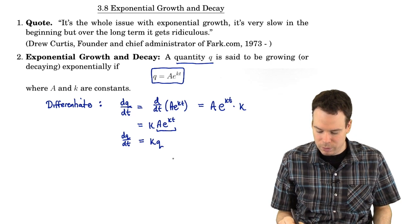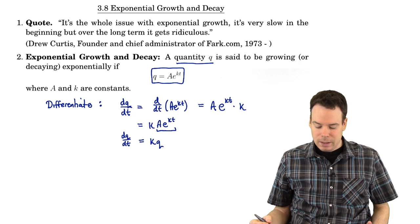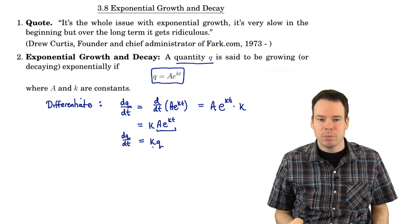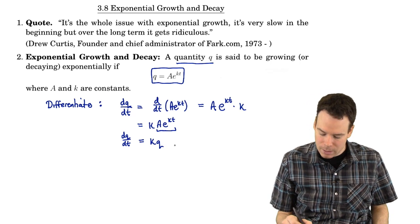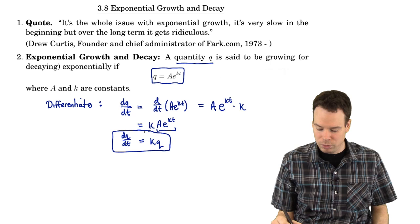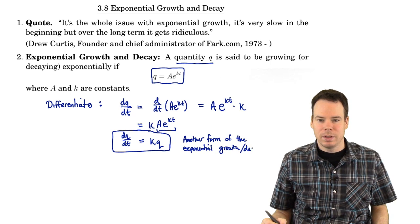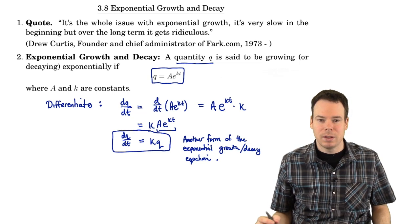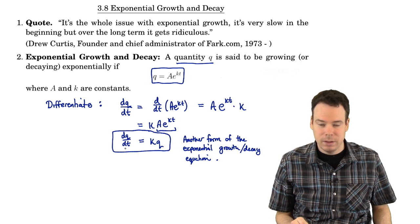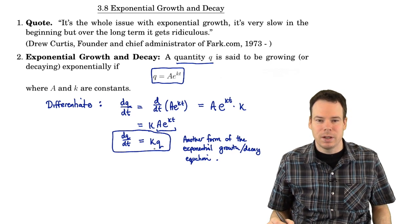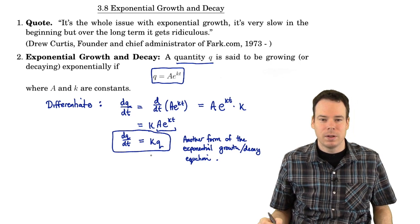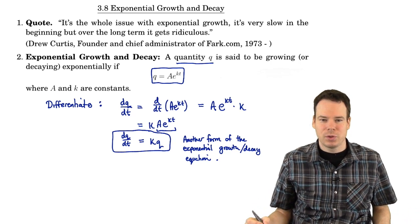So the derivative of Q is just a multiple of Q. This means the rate of change in Q — how fast the quantity is changing — is proportional to the quantity that you have. This is a much more natural way to look at exponential growth and decay, and another form of the exponential growth and decay equation. A quantity is growing exponentially if its rate of change is proportional to itself. These are equivalent ways to look at exponential growth, but the derivative form comes up a lot in applications.